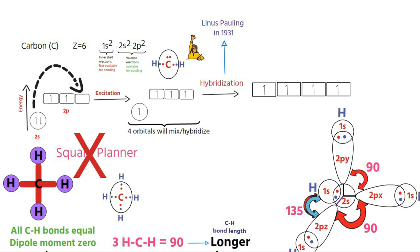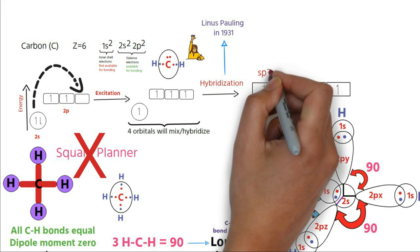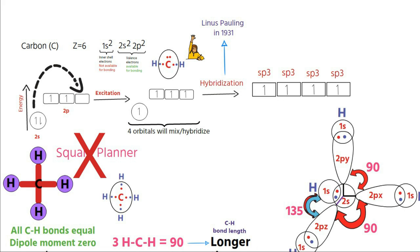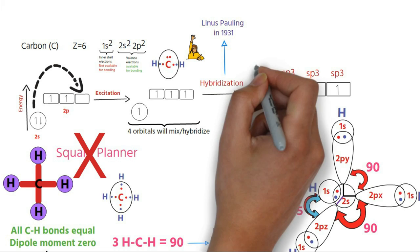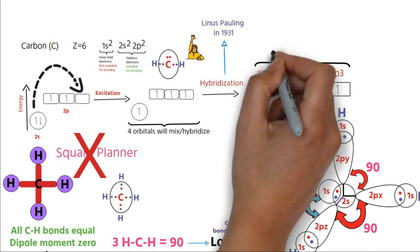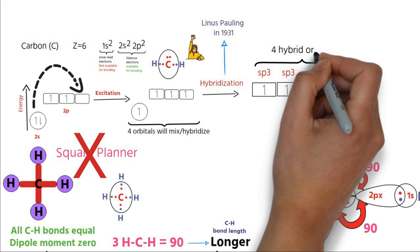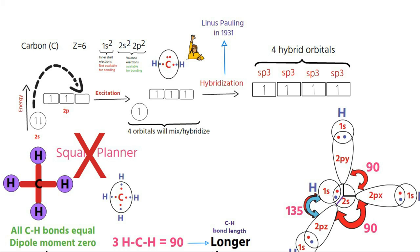Thus, in case of methane, before bond formation, one s and three p orbitals of the second shell of carbon are combined to form four hybrid orbitals, denoted as sp3 orbitals. Such mixing of one s and three p orbitals is referred as sp3 hybridization.